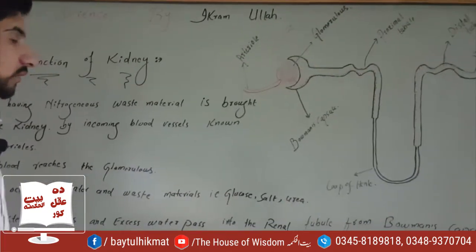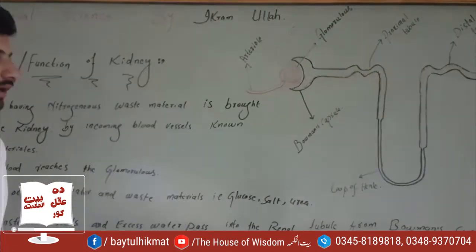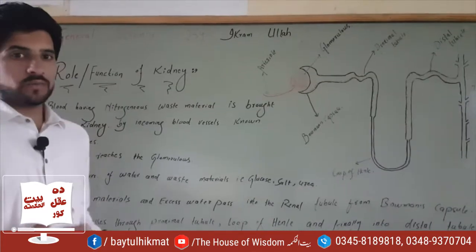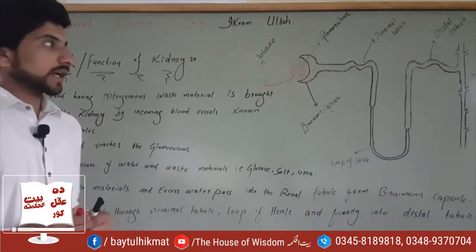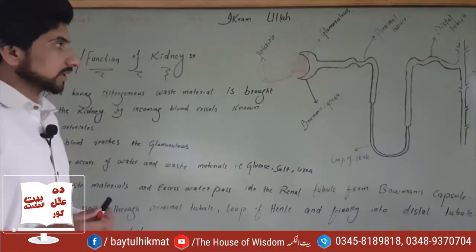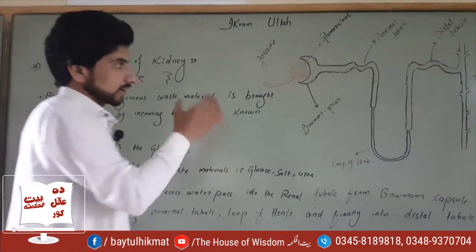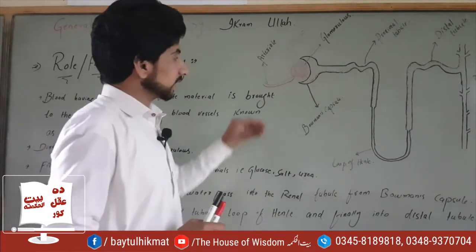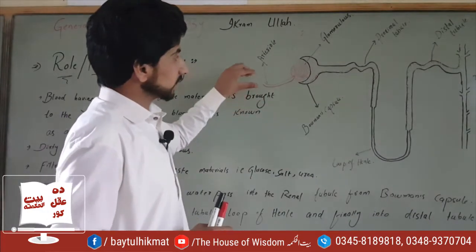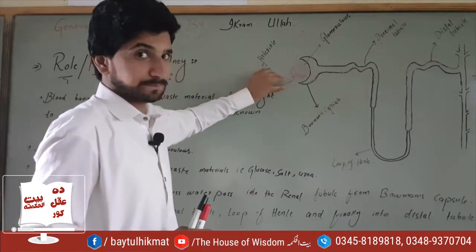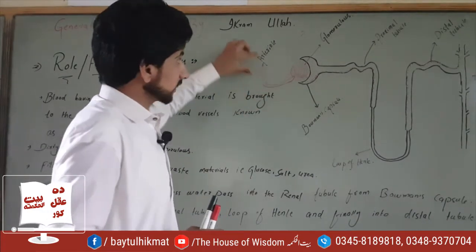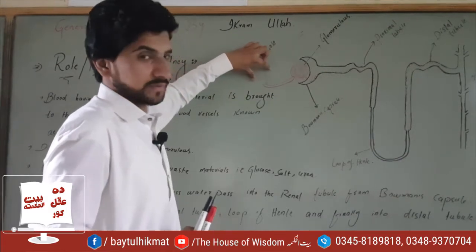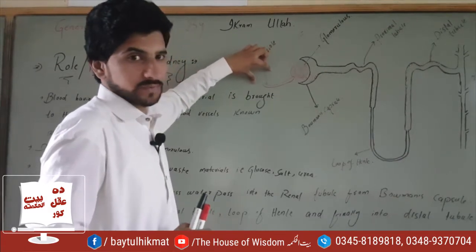This is the loop of Henle where waste material is processed. This is the body of Henle. This is the kidney. This is the glomerulus. This is the artery wall. This is the waste material.